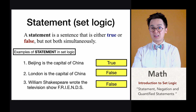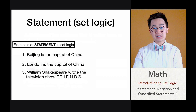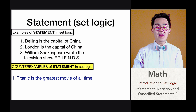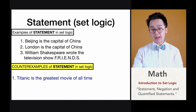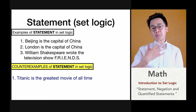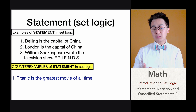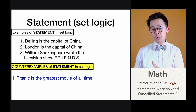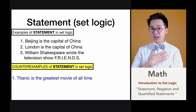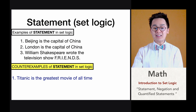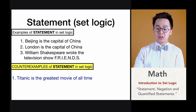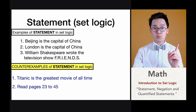Now, what are some examples that are not considered valid statements in set logic? The first counter-example is: Titanic is the greatest movie of all time. This is not valid because it may be false for one person and true for another — it's an opinion, not a fact, so it does not qualify as a statement in set logic.